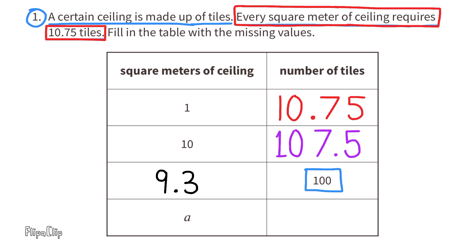Since the constant of proportionality is the square meters of ceiling times 10.75, then a times 10.75 would equal the number of tiles needed for a, the unknown square meters of ceiling.